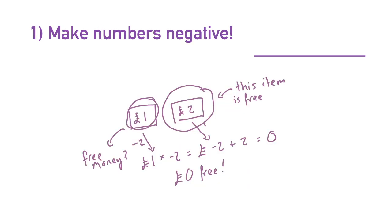My tip number one is make numbers negative. If you see a number, make it negative and check if it's accepted, especially on quantities. Here's a good way of thinking about it: if you've got two items, one is £1 and one is £2, and you have minus two of the £1 item, that is minus £2. A minus number may not go through payment systems, but what it will do is give you a discount, because it won't be smart enough to realize that's minus two of something. So you can add something worth £2, and they cancel each other out — negative two of item one plus one of item two gives a total cost of zero, and that makes it free.